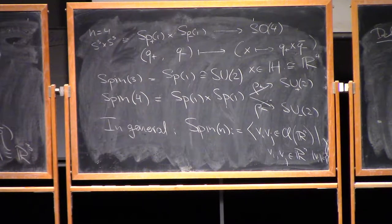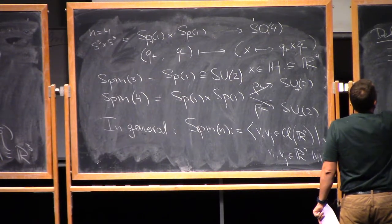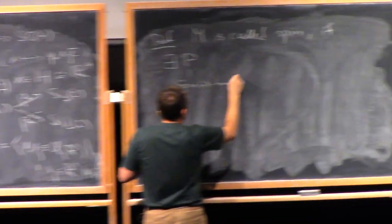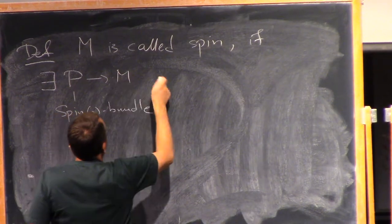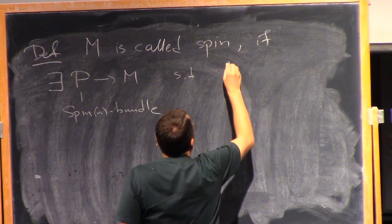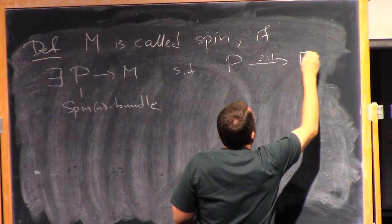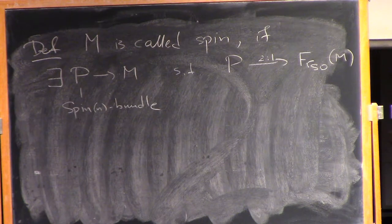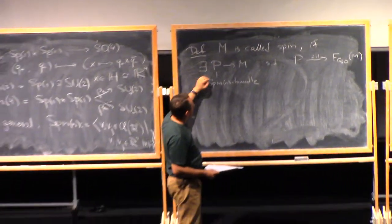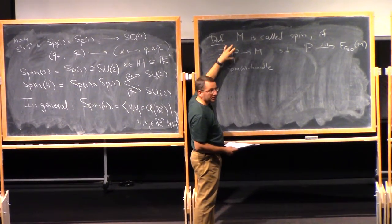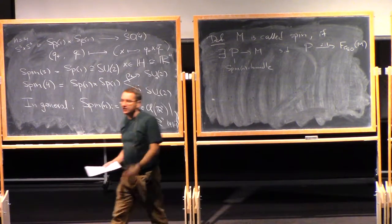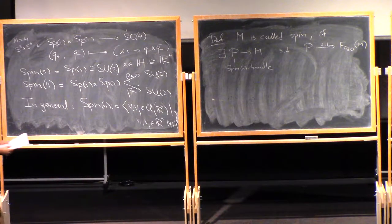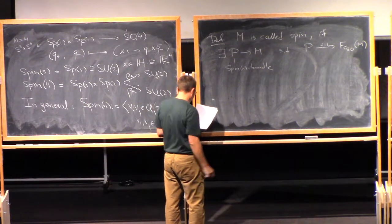if there exists a bundle P. So this is a spin N bundle over M, such that we have a 2 to 1 covering P of the principal bundle of orthonormal frames of M. So, a spin structure, so a spin bundle P may or may not exist. So, for instance, in dimension 3, any manifold is spin. In dimension 4, CP2 is not a spin manifold. Right, so it may or may not exist, as I said, but let us assume it does exist.